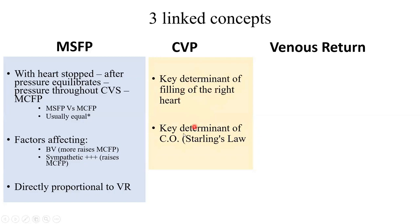Central venous pressure (CVP) is the right atrial pressure — it's the key determinant of filling of the right heart, and it has a direct proportional relationship with cardiac output according to Frank-Starling's law. So the more the CVP, the more the cardiac output in a normal heart. However, the more the CVP, the lesser would be venous return, because the welcoming pressure in the right atrium should be as low as possible — normally zero to four mmHg. Increasing it retards or pushes venous return backwards.